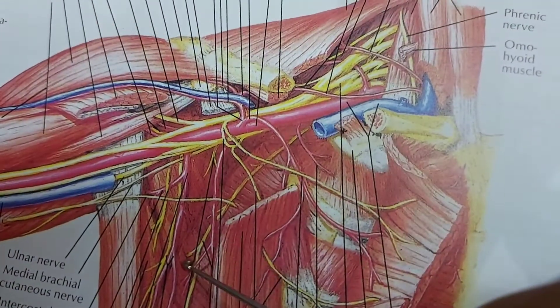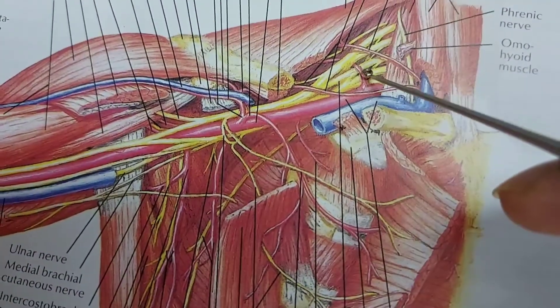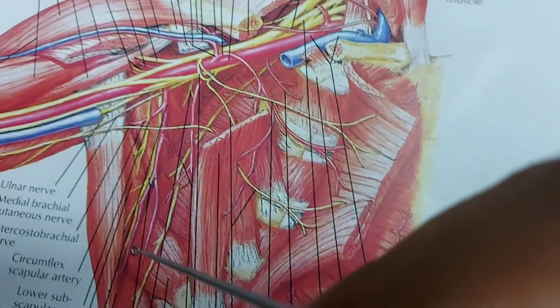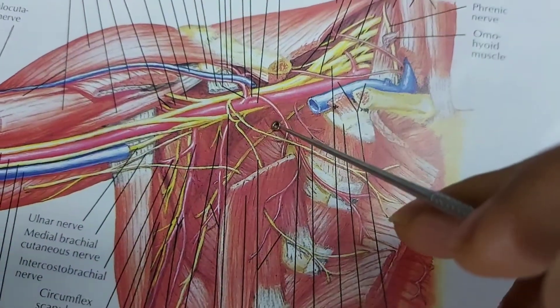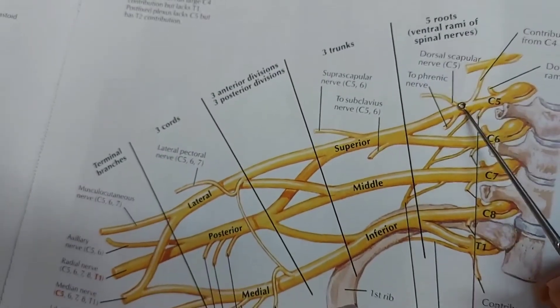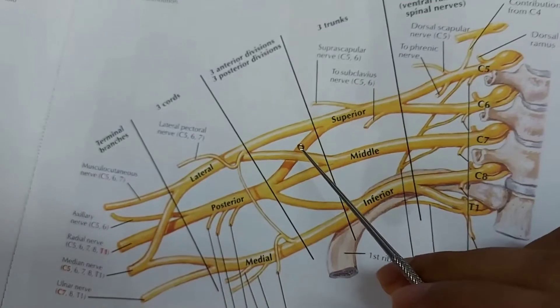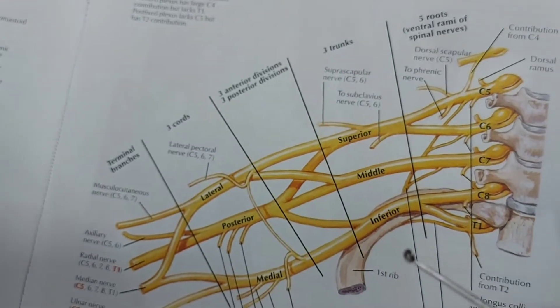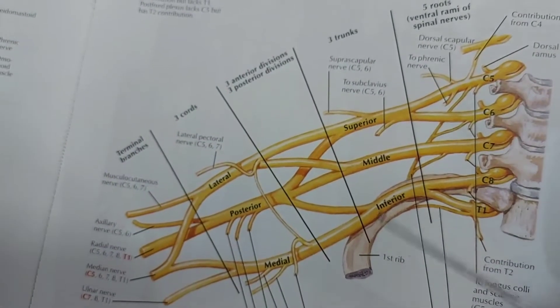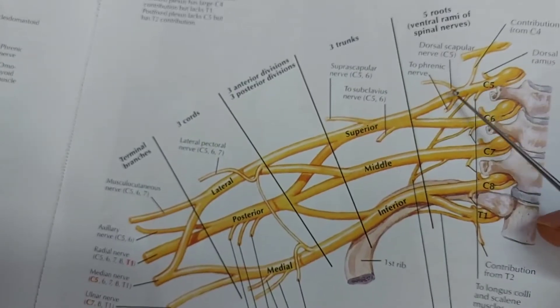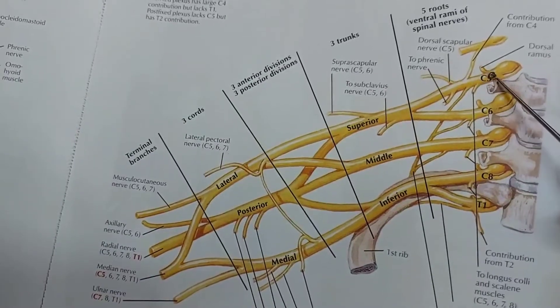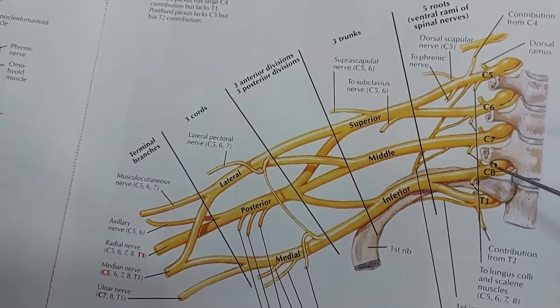Here we see the long thoracic nerve. It arises from the brachial plexus in the neck and descends down to supply the serratus anterior muscle. The question is from which part of the brachial plexus this nerve arises. The brachial plexus has different parts: roots, trunks, divisions, cords, and terminal branches. The answer is that the long thoracic nerve arises from the root of the brachial plexus.